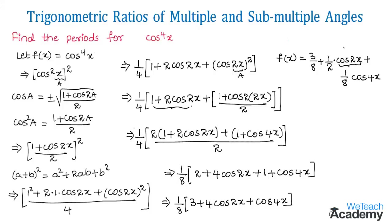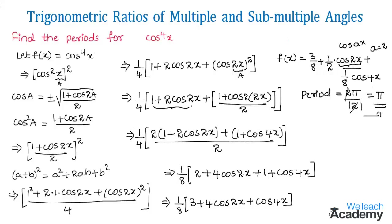This function is in the form of cos(ax). For cos 2x, comparing with cos(ax) gives a = 2. The period of cos(ax) is 2π/|a|, so the period of cos 2x is 2π/|2| = π. Let us call this equation 1. Now for cos 4x, comparing gives a = 4.